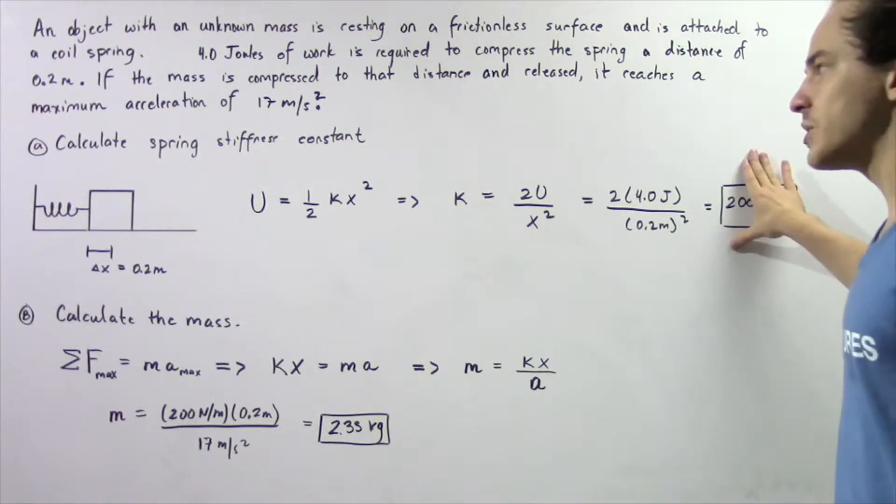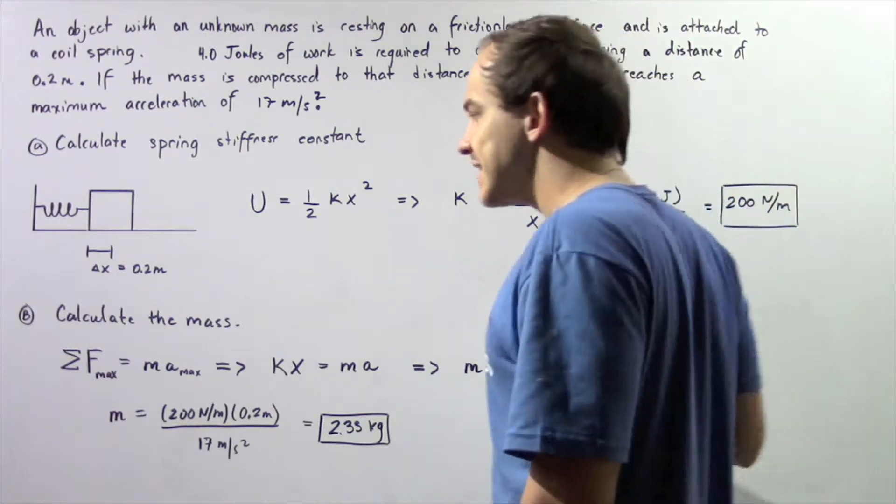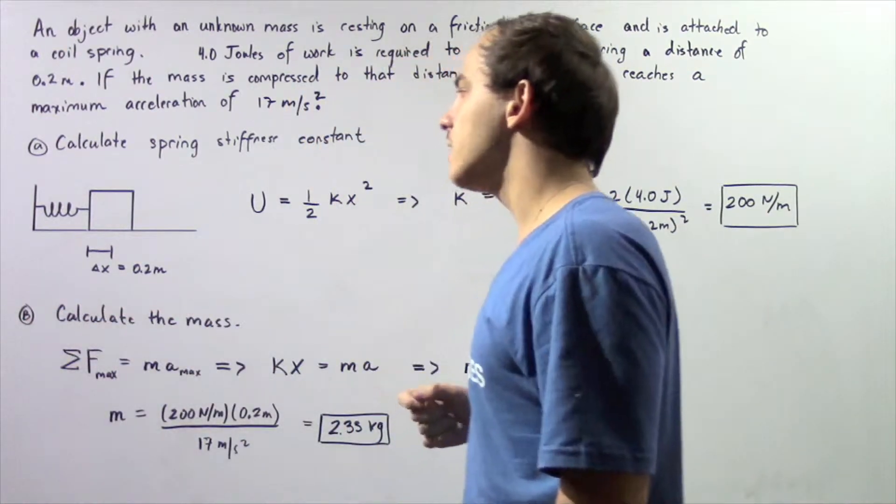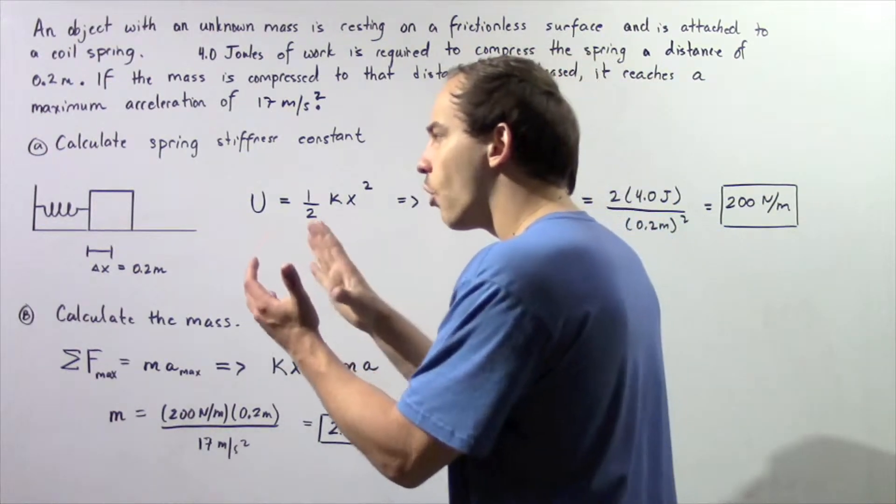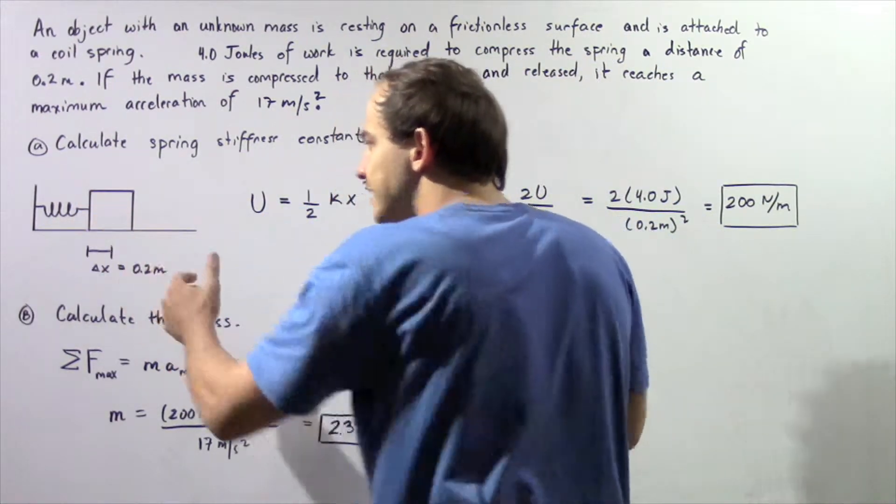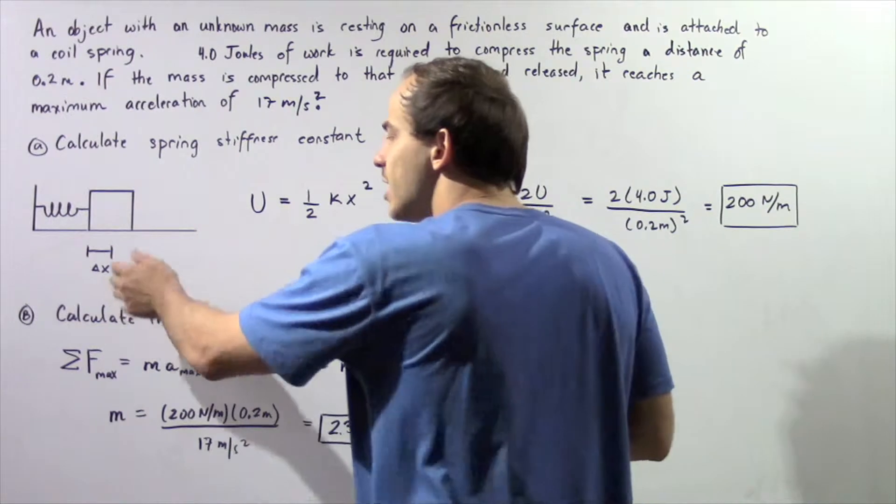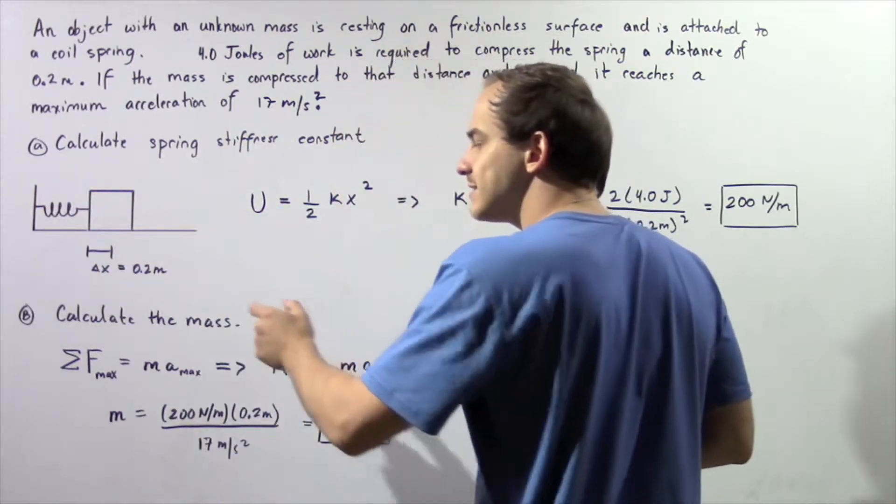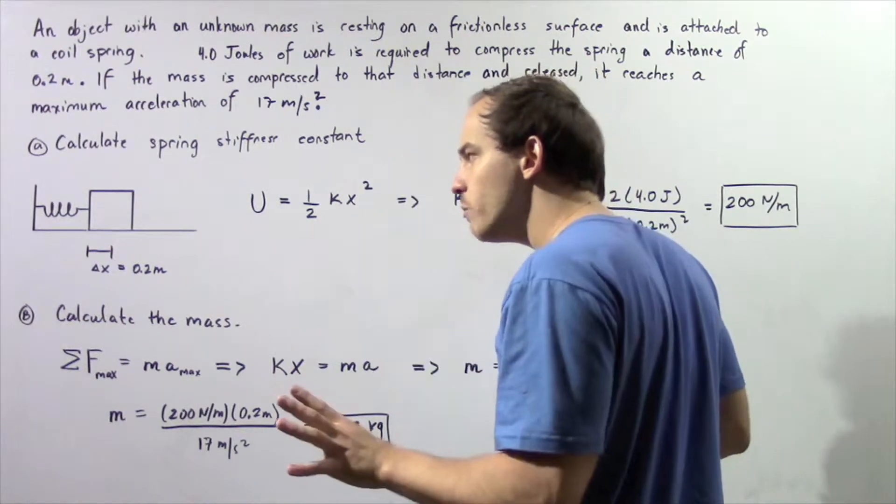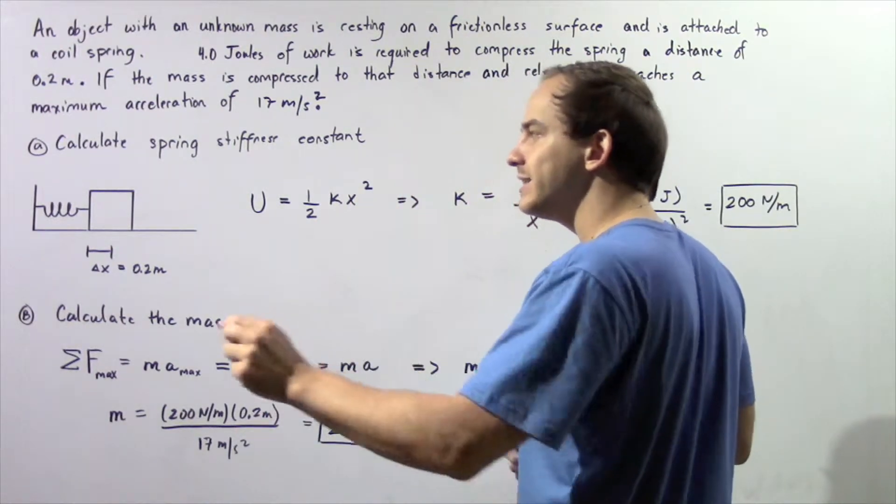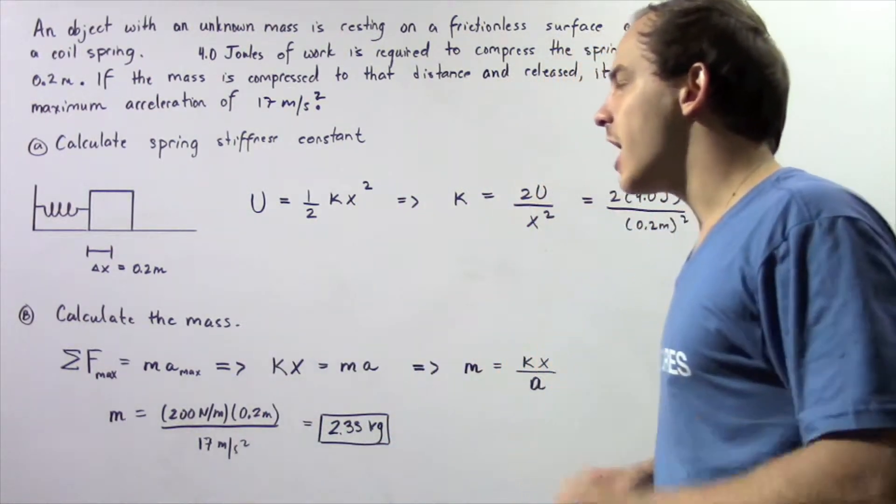Knowing this spring stiffness constant, we want to calculate the mass of our object. Once again, let's suppose we apply a force onto our object and we compress the spring a distance of 0.2 meters.